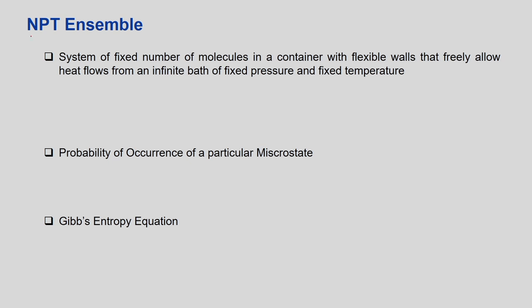The NPT or isobaric isothermal ensemble is a system of a fixed number of molecules in a container with flexible walls that freely allows heat flow from an infinite bath of fixed pressure and fixed temperature. When we talk about flexible walls, it means the box can contract or expand. So when the number of molecules, pressure, and temperature are constant, what changes is the volume — the system is able to freely contract or expand.